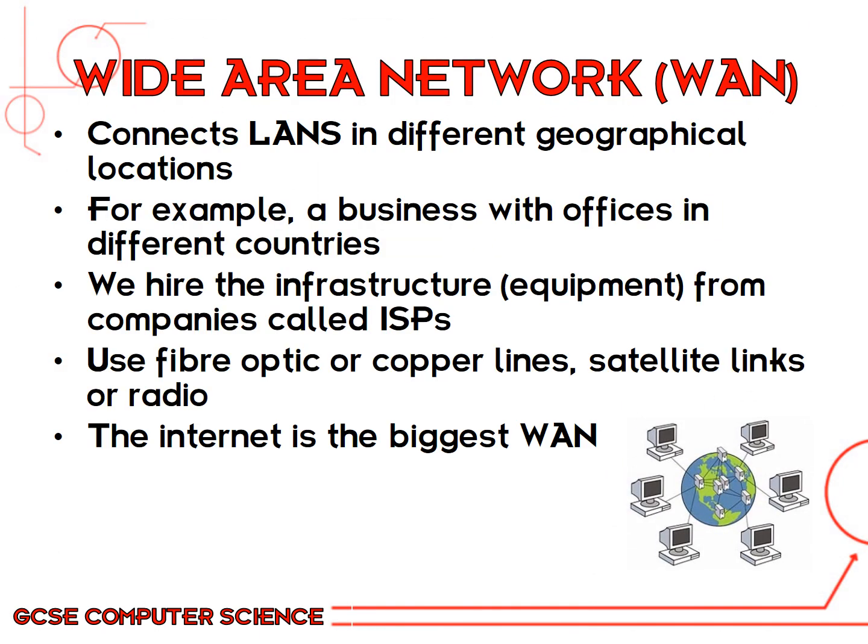The other type of network we need to look at is a wide area network. This is basically when you have multiple LANs connected from different geographical locations, all connected together to form one wider area network. For example, a business with offices in different countries or different parts of the UK — those companies will hire the infrastructure equipment going between the sites from ISPs, internet service providers. Examples would be BT, Sky, Virgin. Between the sites, it's going to use fiber optic or copper wires underneath the floor to connect all the different parts of the network together.